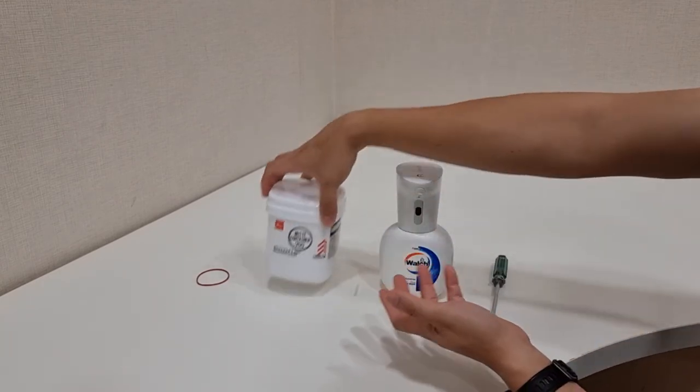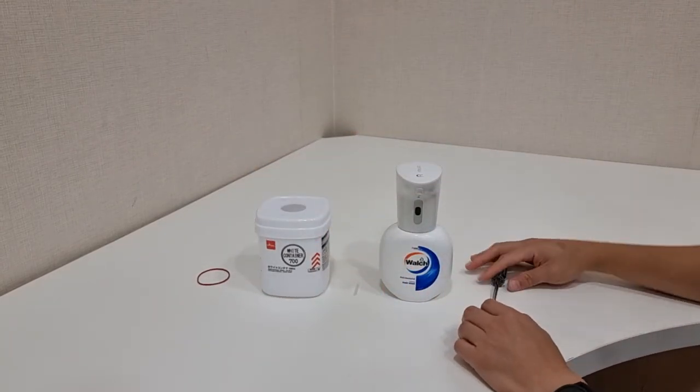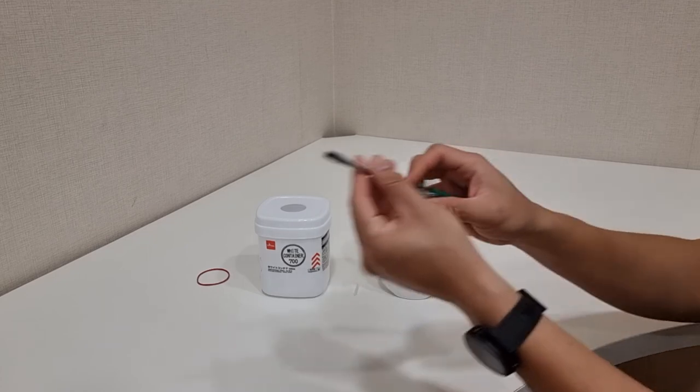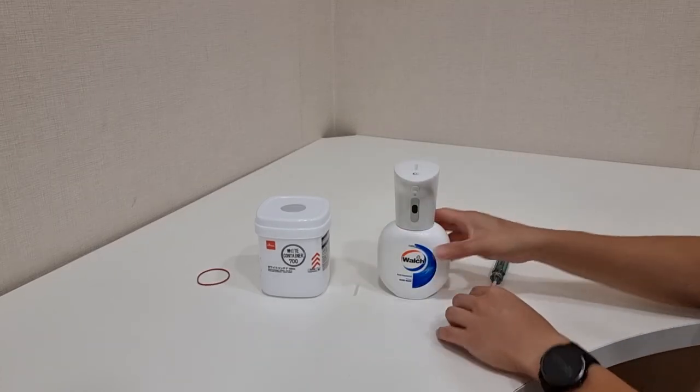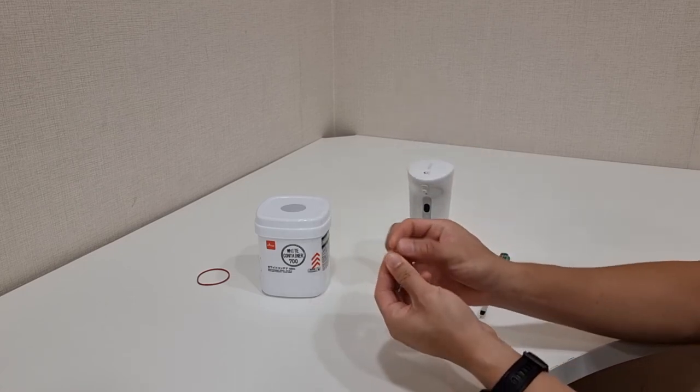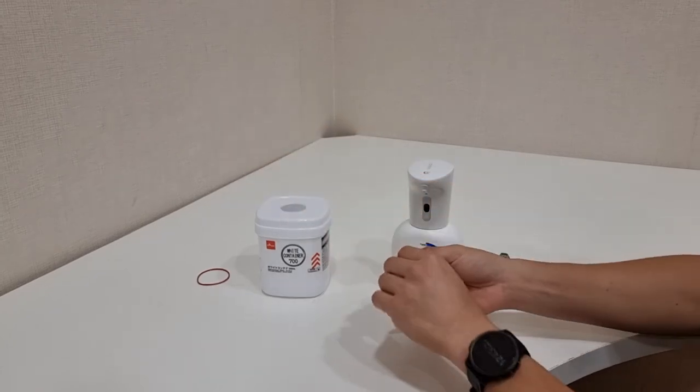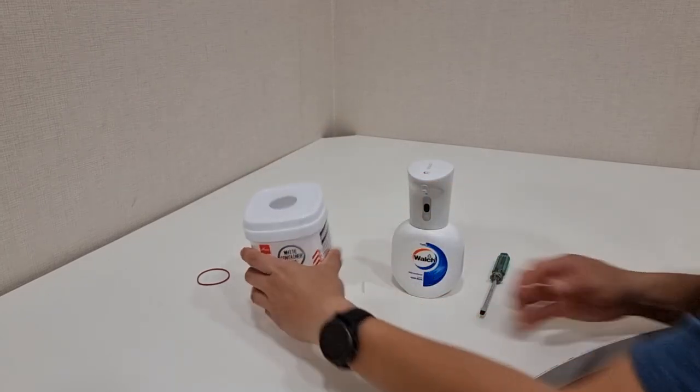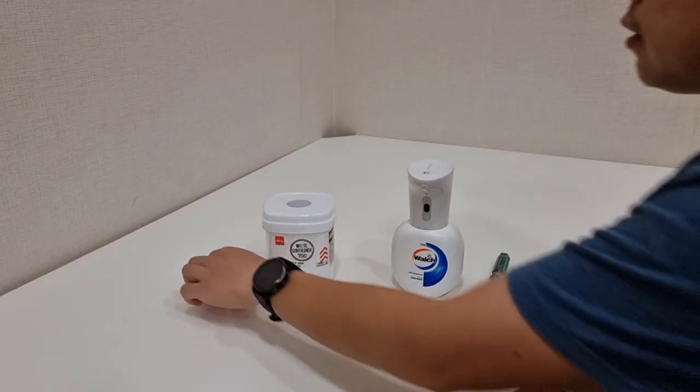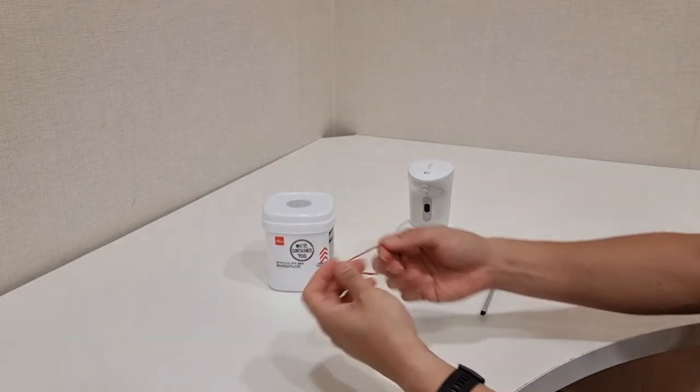The things you'll need are, first, a flat tip screwdriver, an expanded Walsh Foaming Hand Soap, an extension tube, the container itself, obviously, and a rubber band.